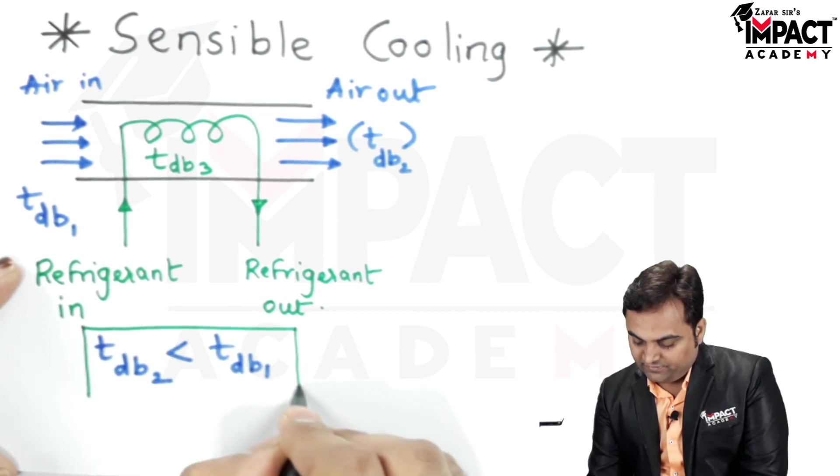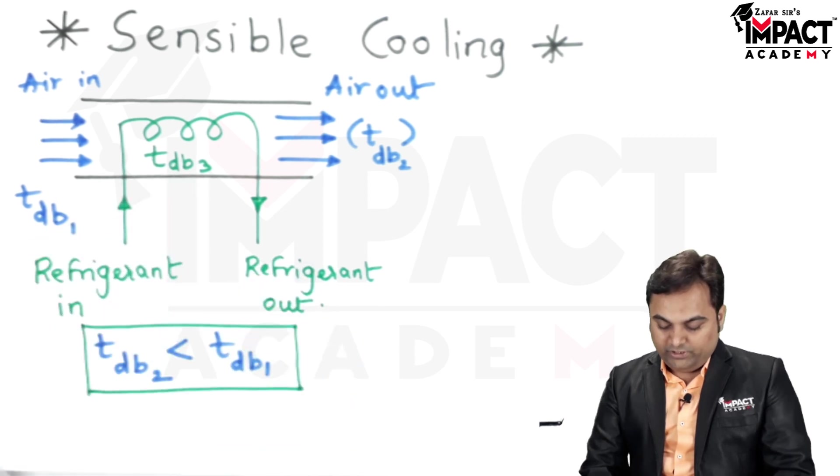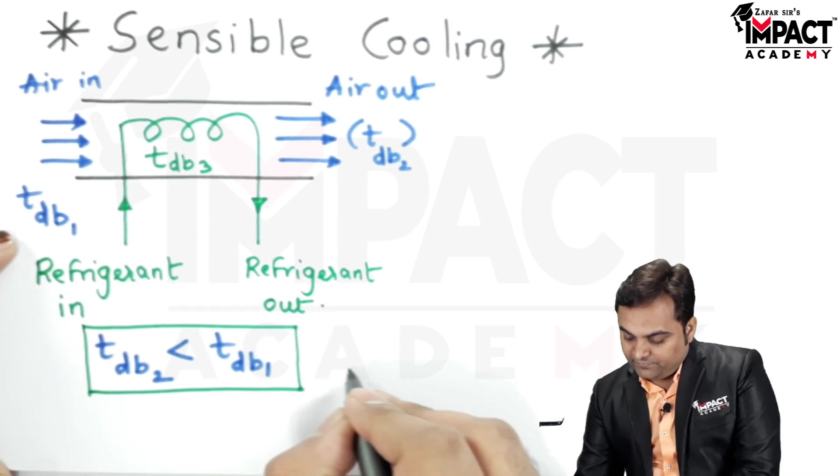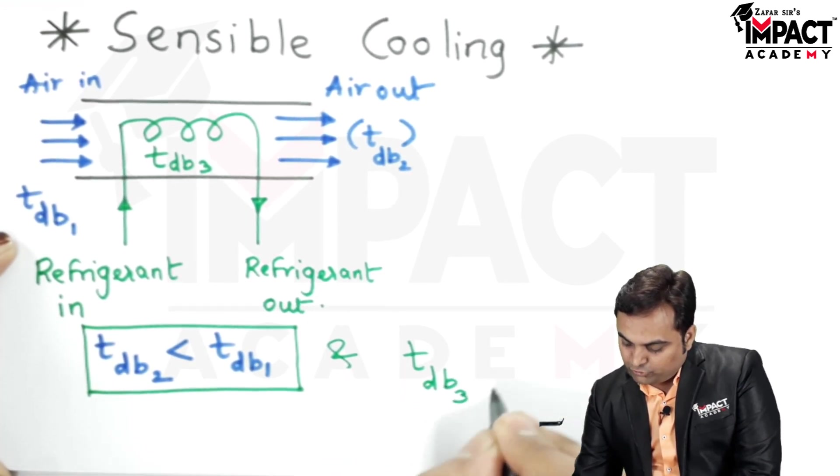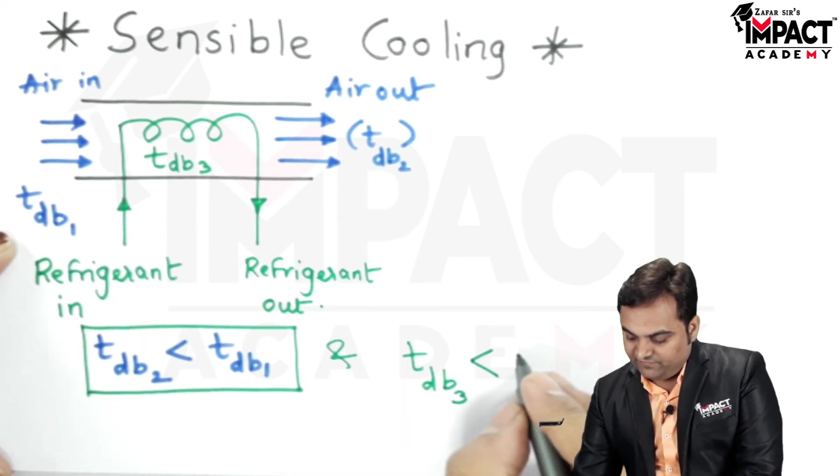Due to the sensible cooling process, and here we have a cooling coil whose temperature would be the lowest here. It means the dry bulb temperature for the cooling coil would be less than the dry bulb temperature of the air which is leaving.